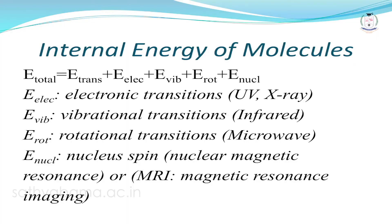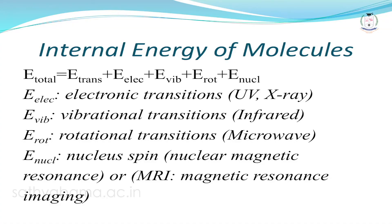The total internal energy of a molecule is given by: E_total = E_translational + E_electronic + E_vibrational + E_rotational + E_nuclear spin. Changes in electronic transitions occur when a sample absorbs UV-visible or X-ray radiation. Infrared absorption leads to changes in vibrational energy levels, microwave absorption leads to rotational transitions, and radio wave absorption leads to nuclear spin energy changes.